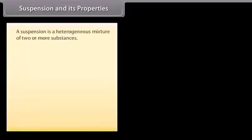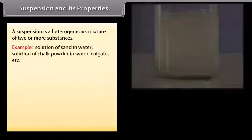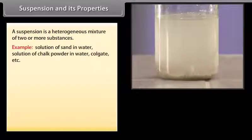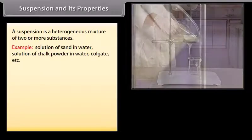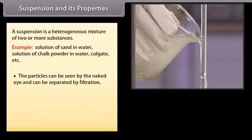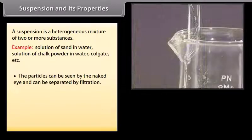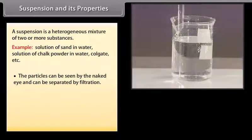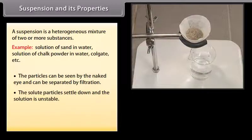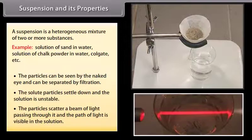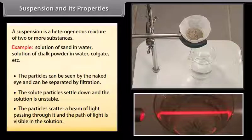A suspension is a heterogeneous mixture of two or more substances. Examples include a solution of sand in water, chalk powder in water, and Colgate. The particles can be seen by the naked eye and can be separated by filtration. The solute particles settle down, and the solution is unstable. The particles scatter a beam of light passing through it, and the path of light is visible in the solution.